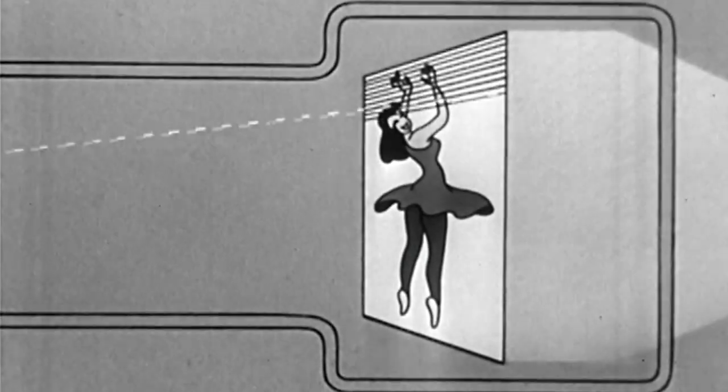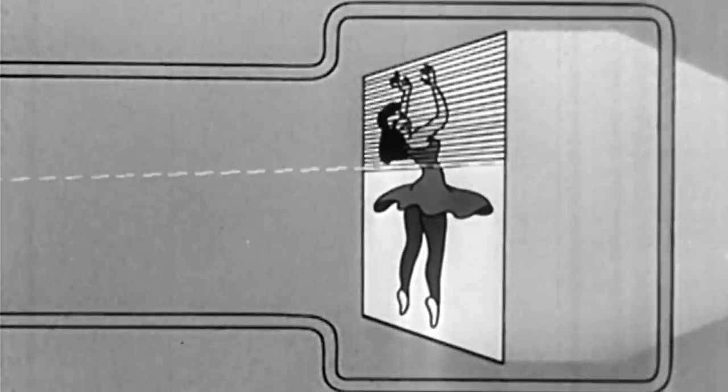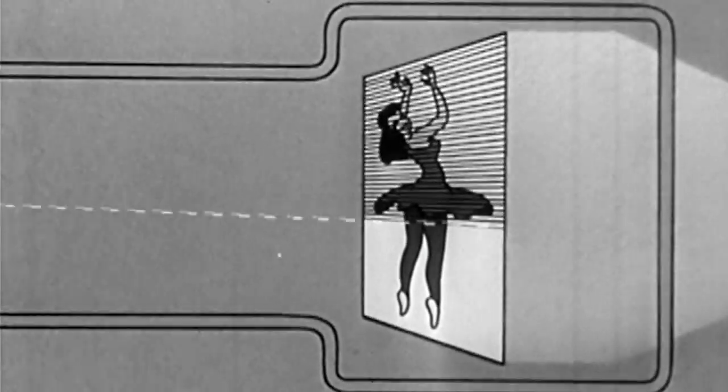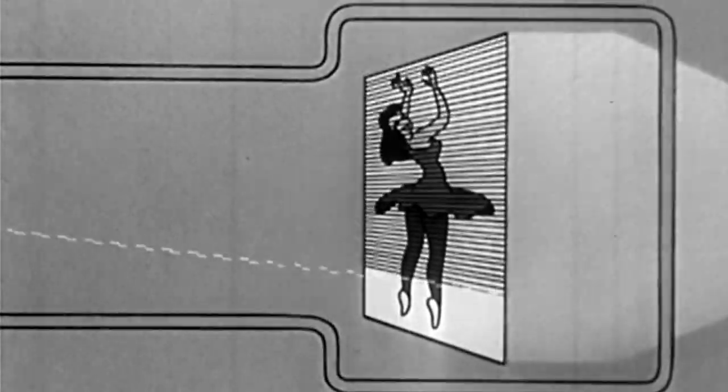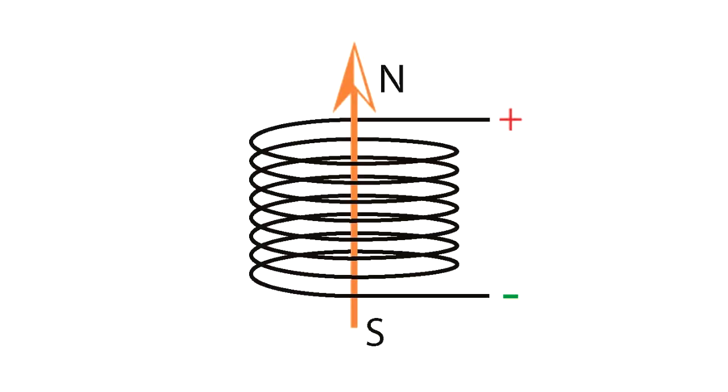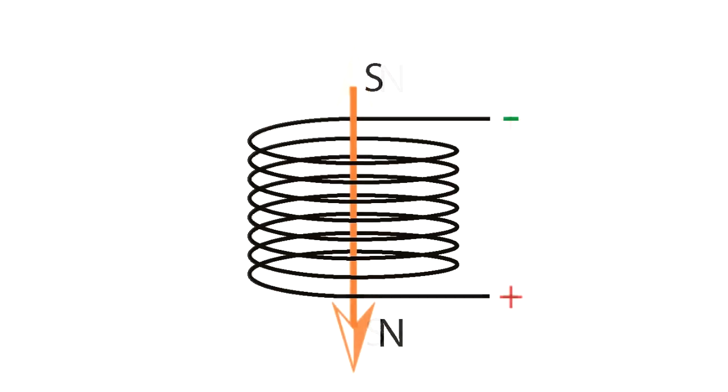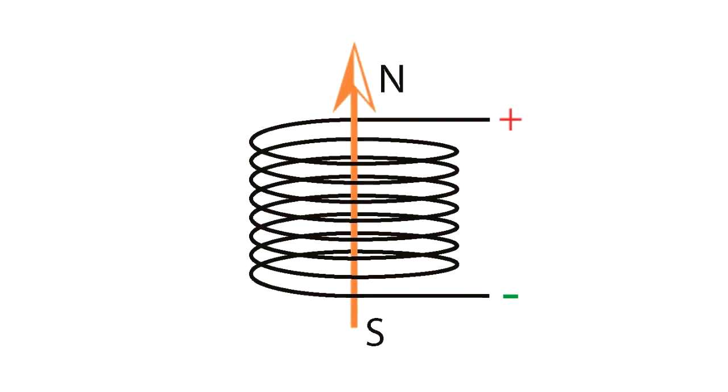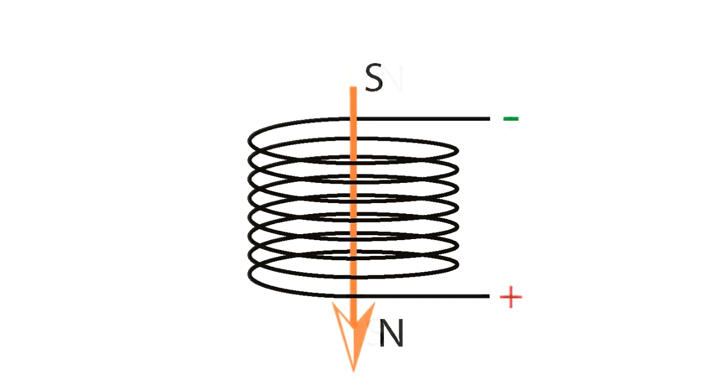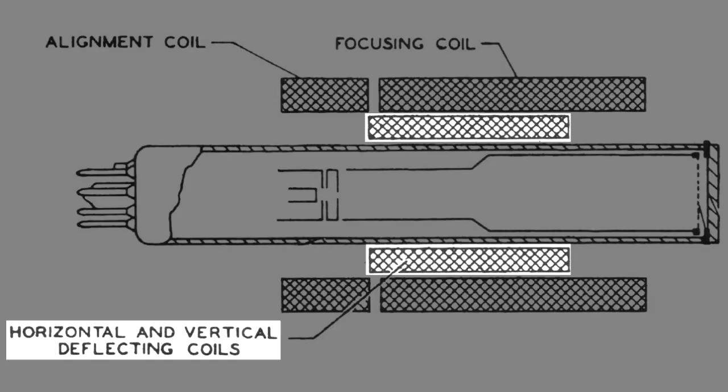The electron beam was moved left to right and top to bottom to cover the entire surface of the photosensitive plate by two coils of wire around the camera tube. If we apply a voltage to a coil of wire, that coil becomes an electromagnet. Since electron beams are attracted and repelled by magnetic fields, that meant the electron beam could be moved around the plate.